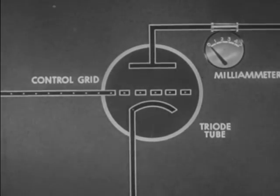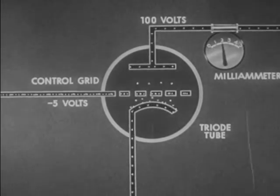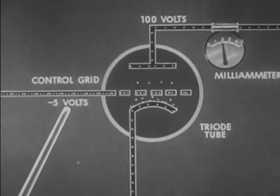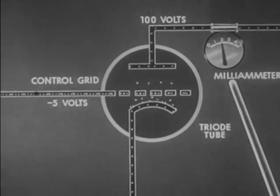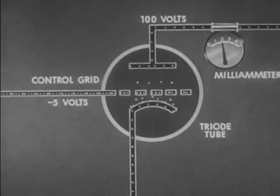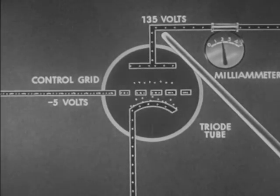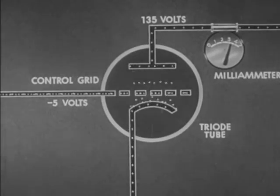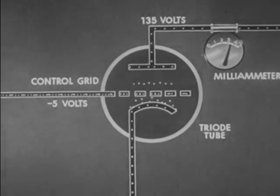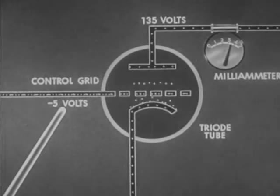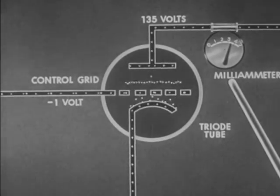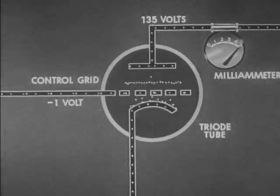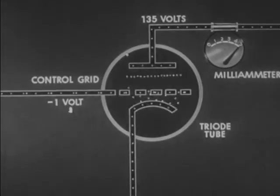Plate voltage change also affects plate current. With minus five volts on the grid and 100 volts on the plate, the milliammeter shows two units of current. A plate increase of 35 volts is necessary to increase plate current to three and a half units. Now if we change grid bias by only four volts, a very great change is seen in plate current. We conclude that the greatest influence on tube output is change in grid voltage.